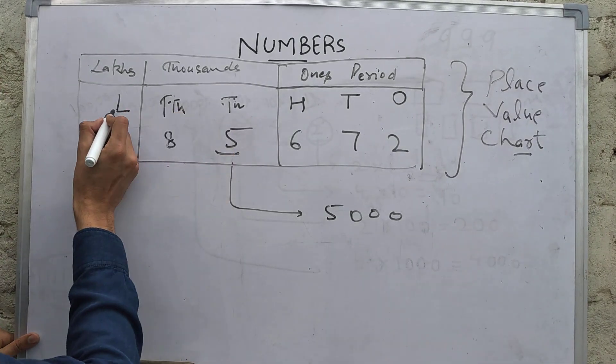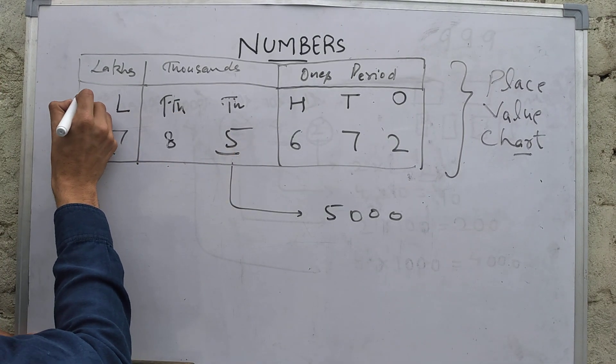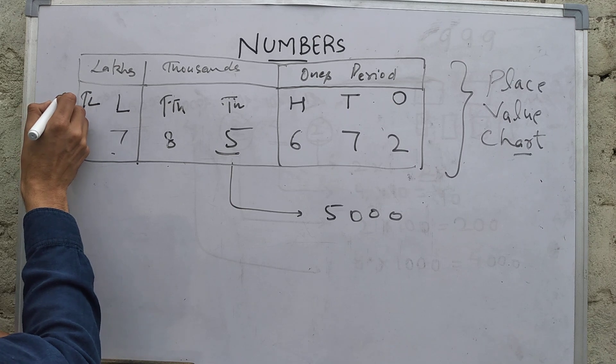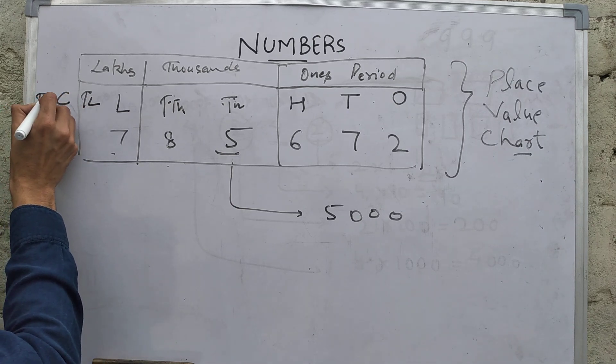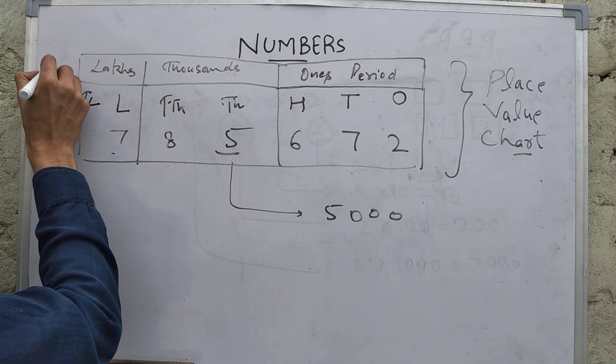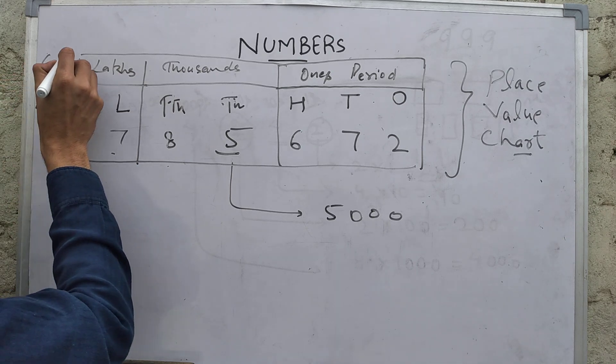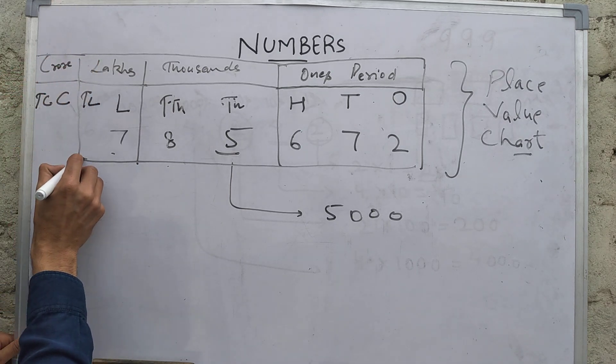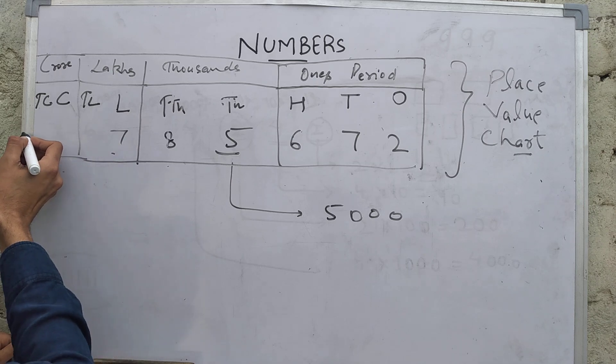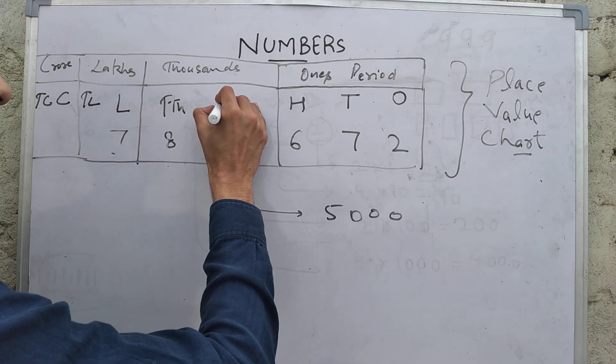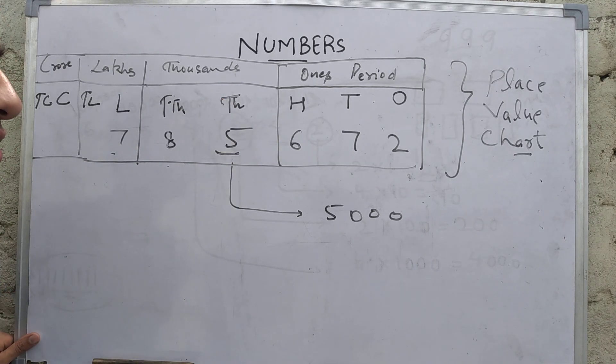And after lakh what we get is 10 lakh, then crore and 10 crore. You can go till crores period. But I am not having anything here, we need not write anything, okay.